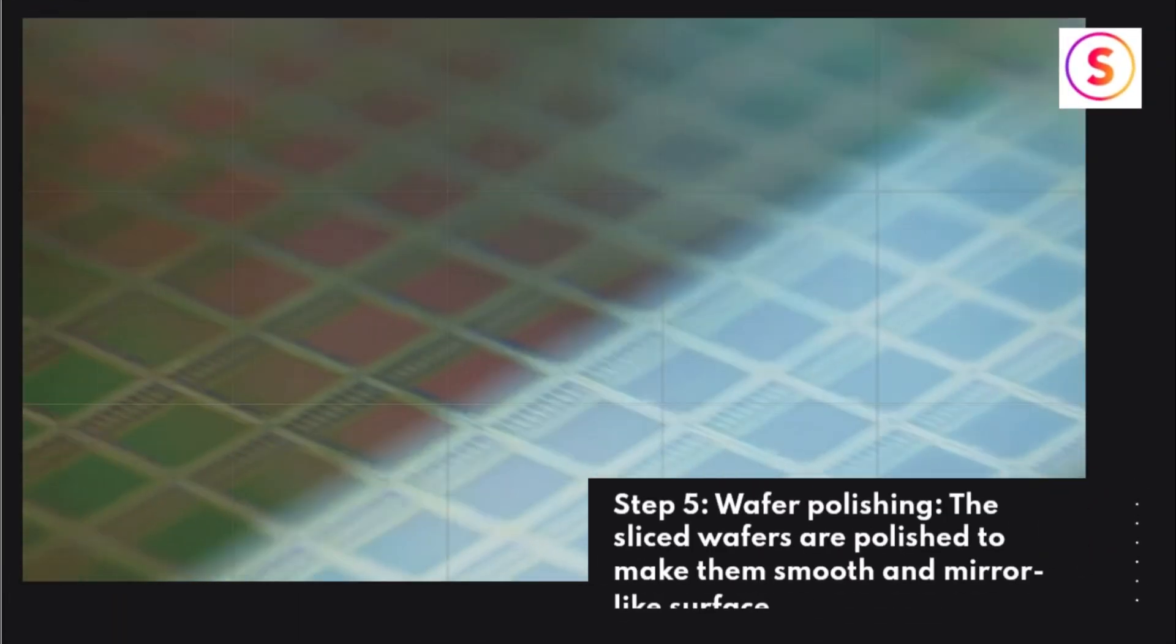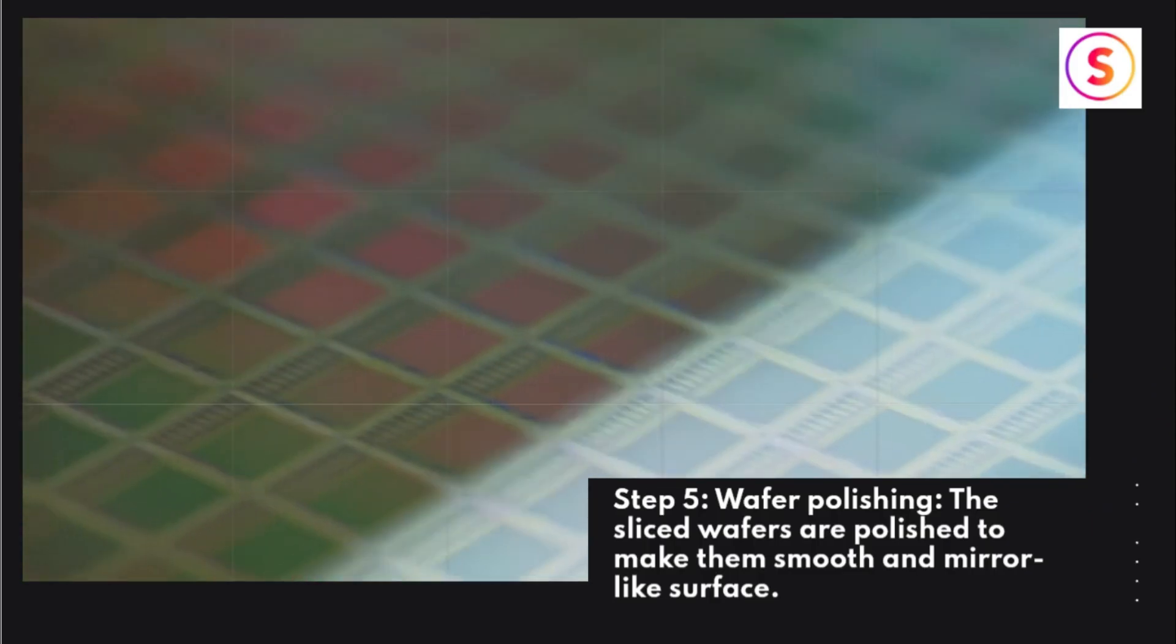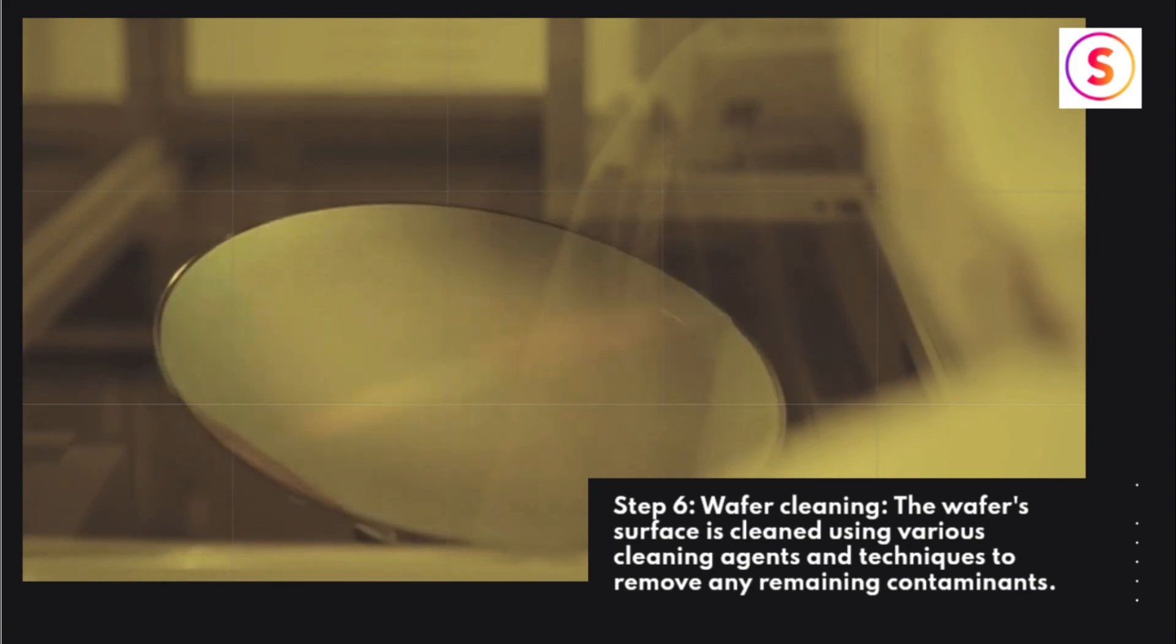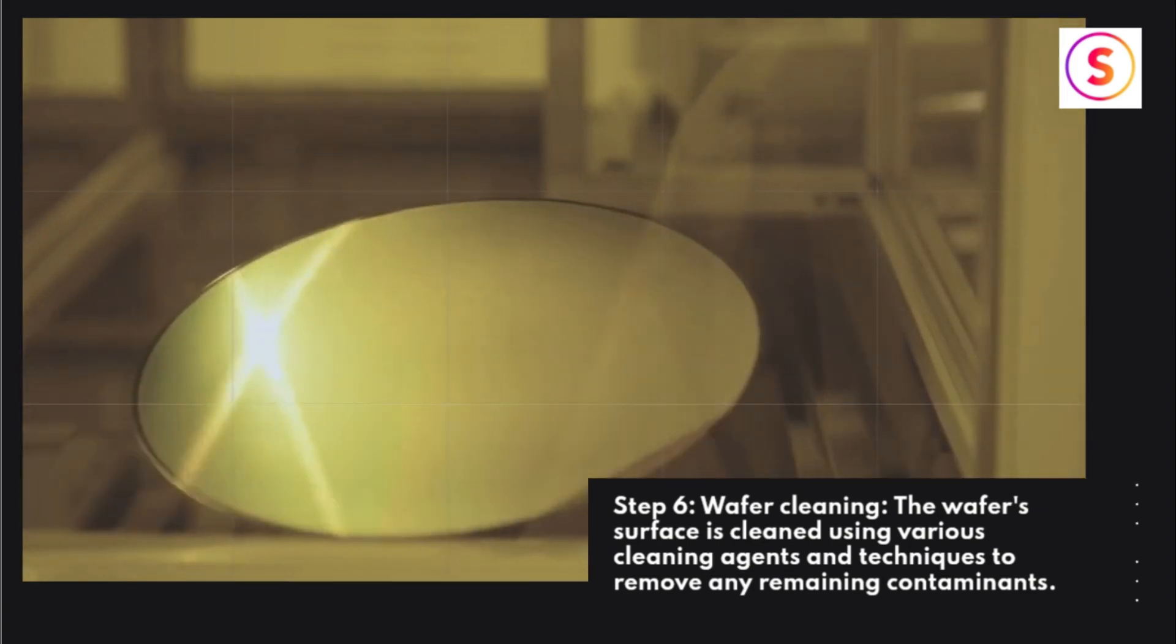Step 5: Wafer Polishing. The sliced wafers are polished to create a smooth, mirror-like surface. Step 6: Wafer Cleaning. The wafer surface is cleaned using various cleaning agents and techniques to remove any remaining contaminants.